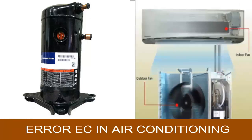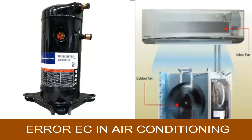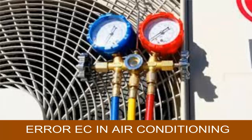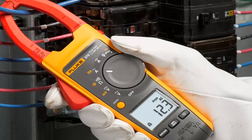If the compressor is running, check the refrigerant level using a manifold gauge. Perform these checks quickly to prevent the system from generating an error again. You can also use an amperage clamp to measure if the current consumption is normal, which helps rule out refrigerant leaks.